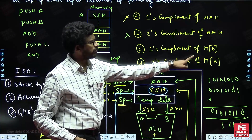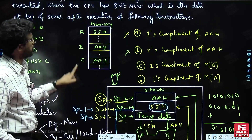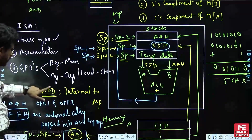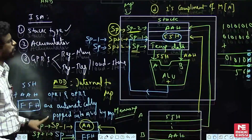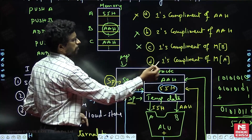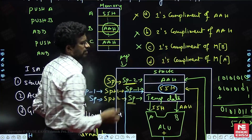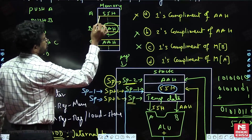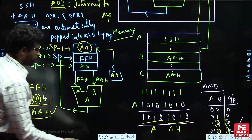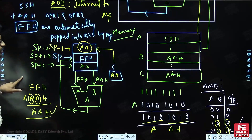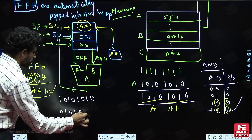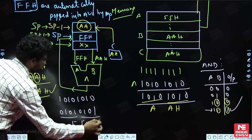The correct answer is: one's complement of memory content at address A. Address A contains 55H (01010101 binary). Its one's complement is 10101010 binary = AAH. So AAH is the one's complement of 55H, which is the content at address A. Therefore, option D is correct.